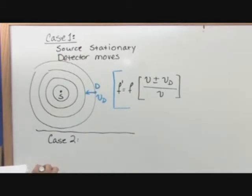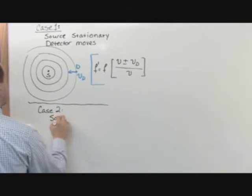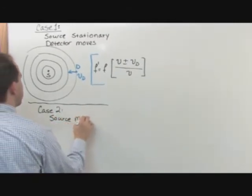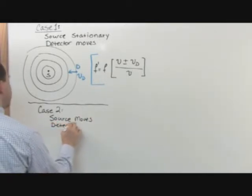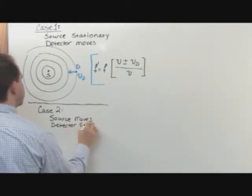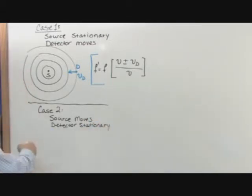Case two means what happens if I have a source that moves and a detector is stationary. Source moves, detector is stationary. If I wanted to draw a picture of that, let's say I had a source and let's say it's actually moving because that's what we're talking about and it has a V sub S. So I'm going to differentiate it with a sub S and you have to get your subscripts right or you're going to get yourself confused.